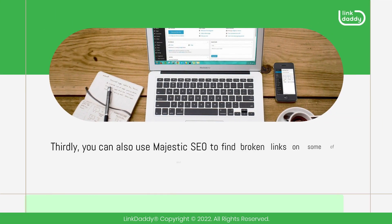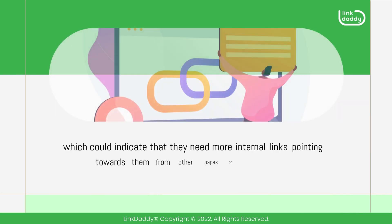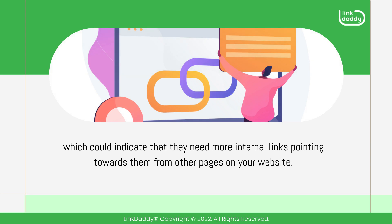Thirdly, you can also use Majestic SEO to find broken links on some of your pages, which could indicate that they need more internal links pointing towards them from other pages on your website.